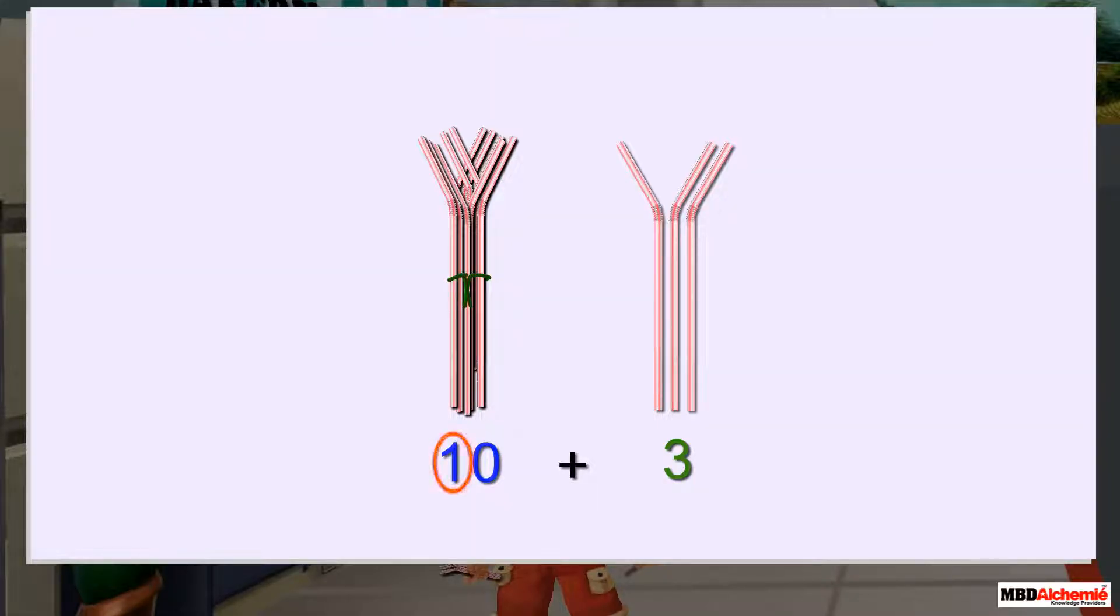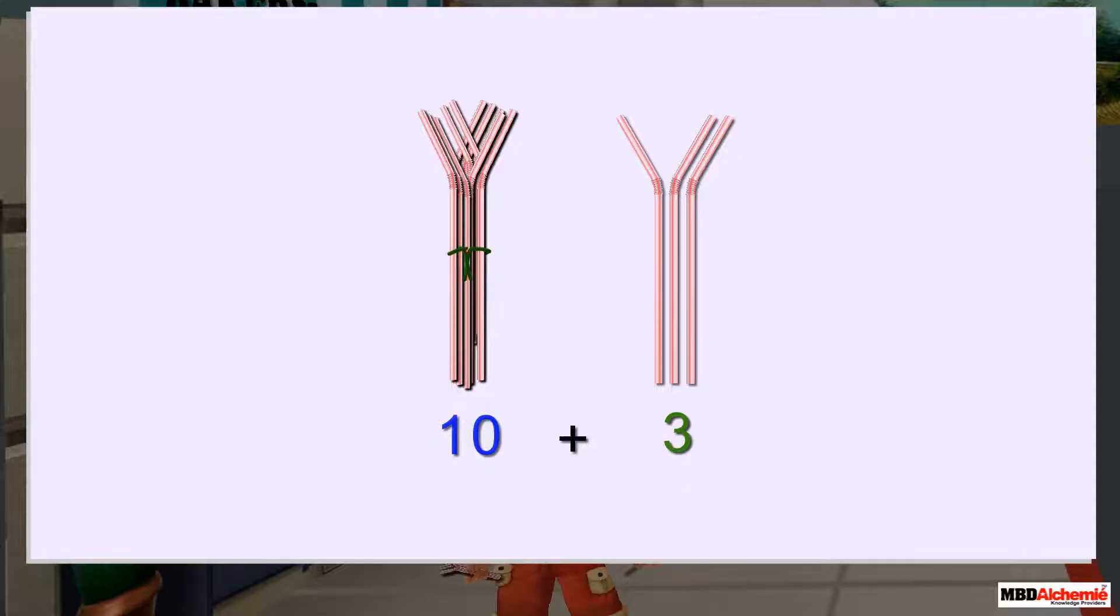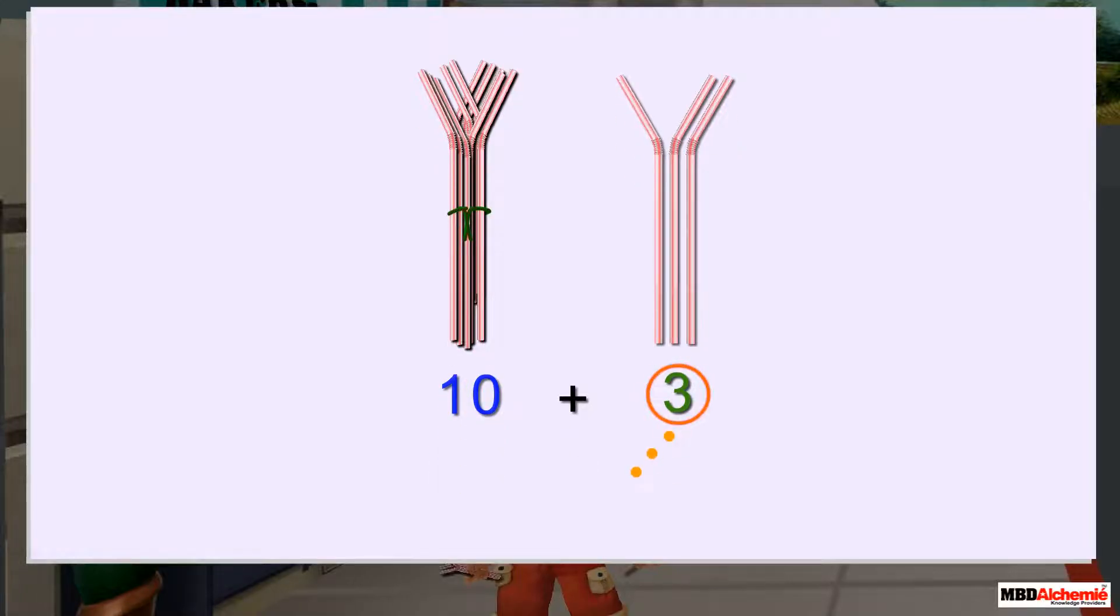There are three ones and there is one ten. So, let's put the digits at their correct places. We have three ones, so three comes at the ones place. Next, we have one tens, so one comes at the tens place. What do we get?